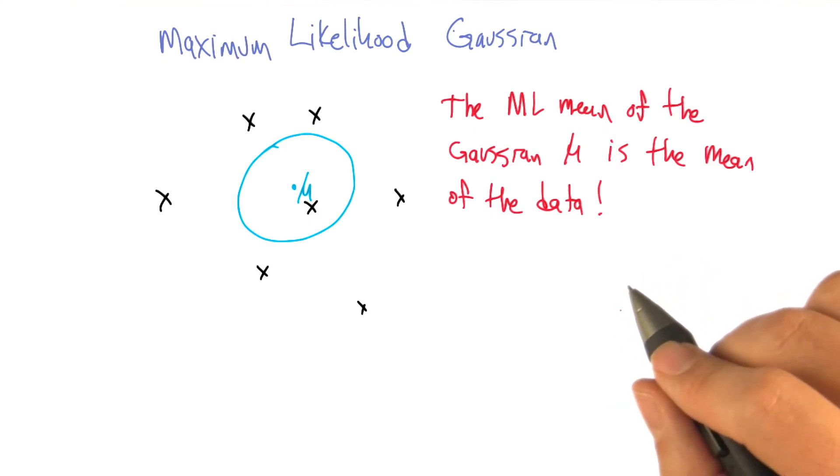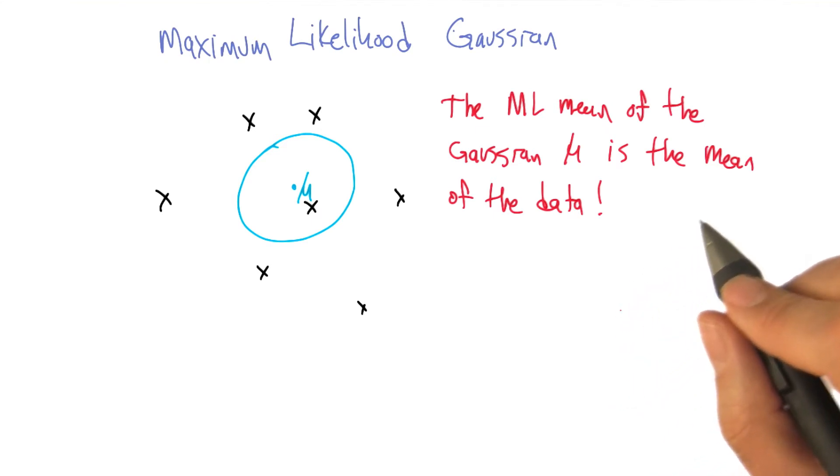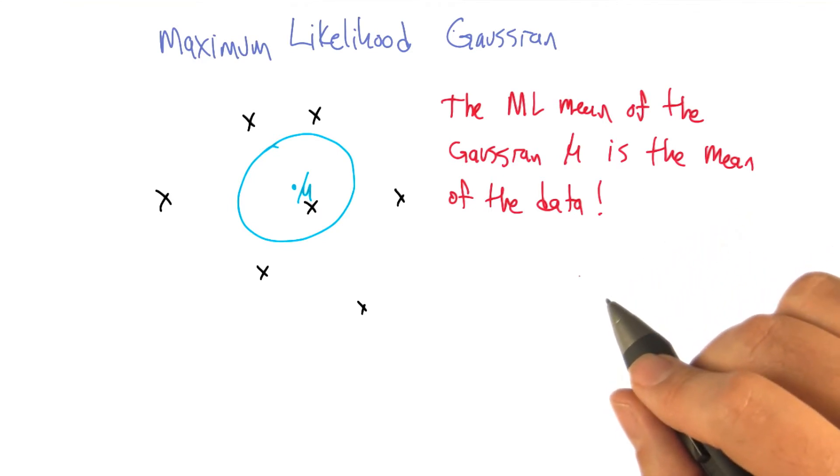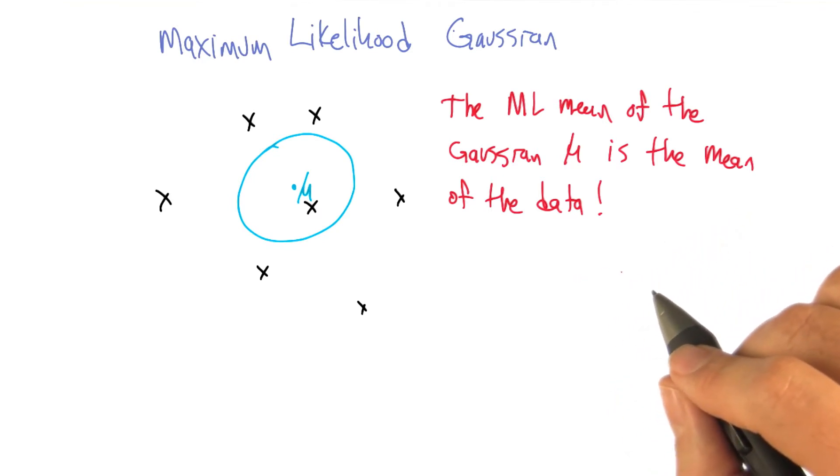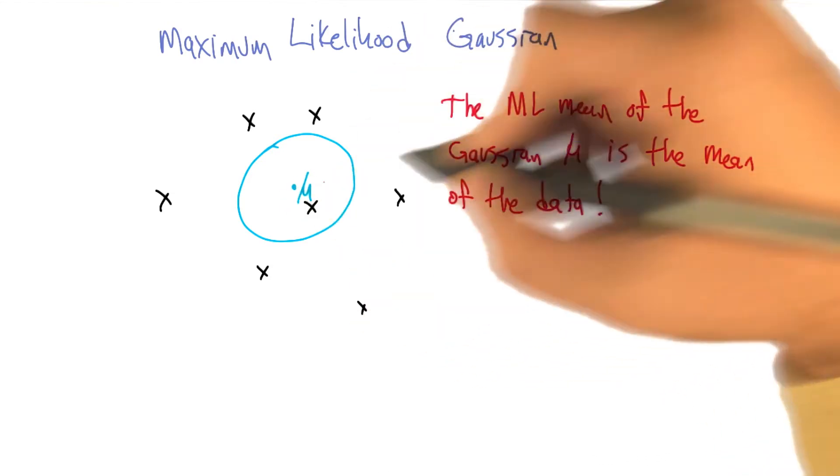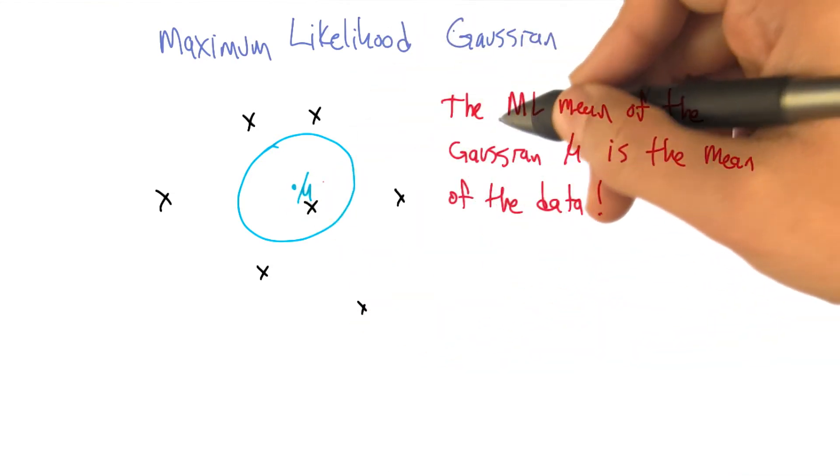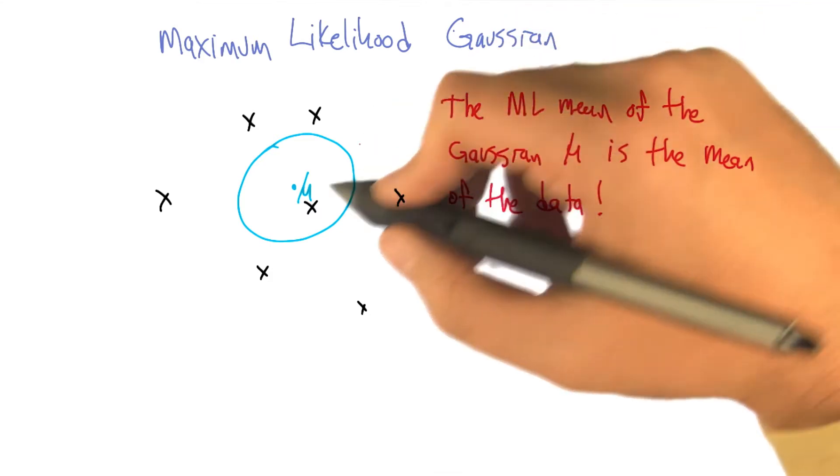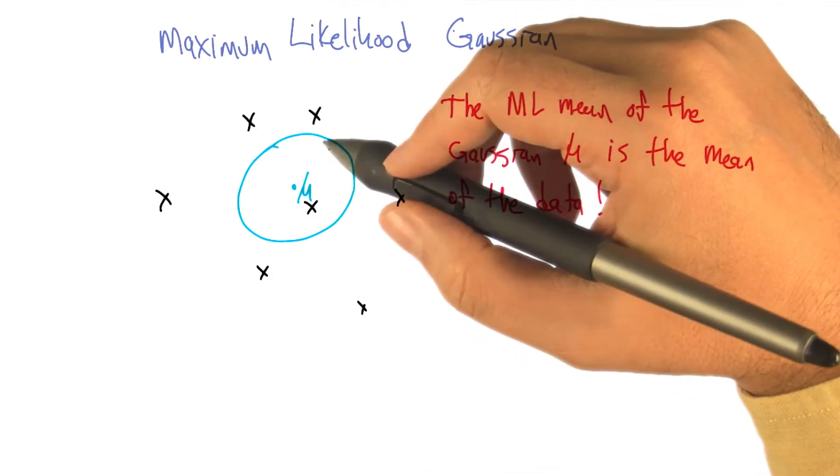So fortunately this is really easy to do and the reason that it works out this way is the same reason that we've talked about in several of the other lessons. But the maximum likelihood mean of the Gaussian, this mu that we want to set, is the mean of the data. The mean is the mean. That's pretty mean. And it's no mean feat that it works out this way.